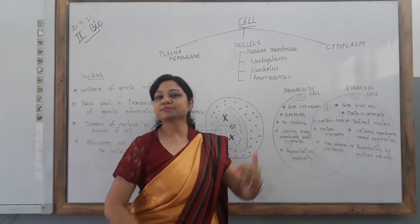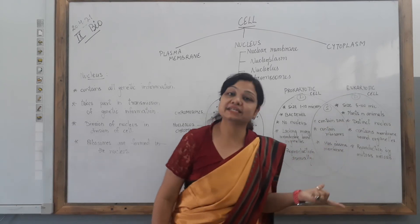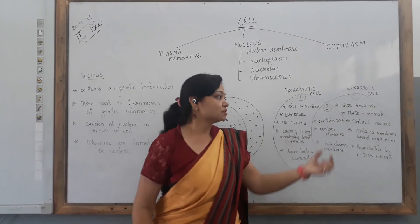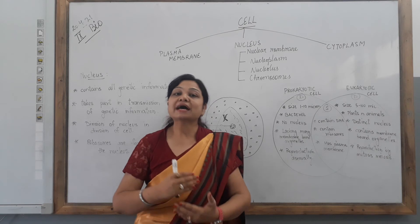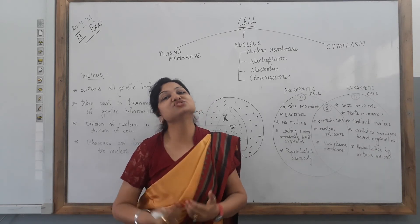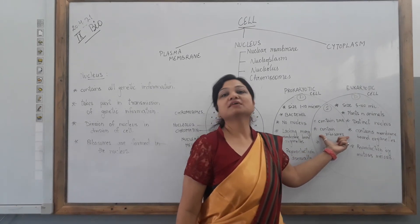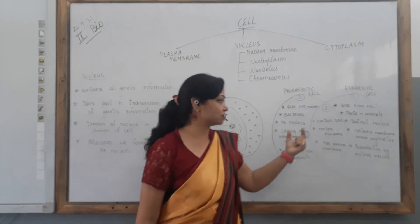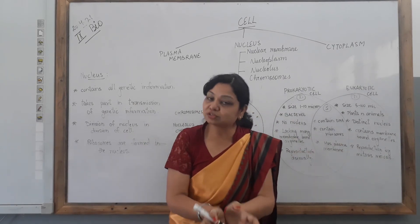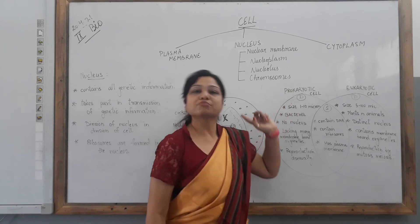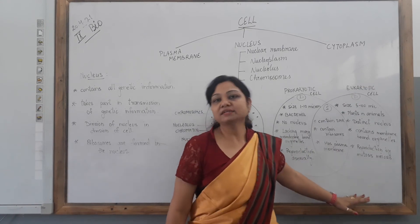Now coming to the similarities between prokaryotes and eukaryotes. They both have DNA — deoxyribose nucleic acid — because that is the main component. The functional unit of DNA is the gene, which carries all the genetic information. They both also contain ribosomes for protein synthesis. And they both have the plasma membrane — the cell membrane is present in both. However, the nuclear membrane is not present in prokaryotes.